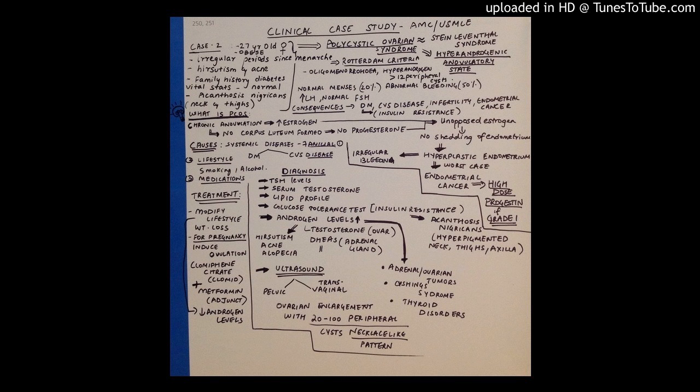So what exactly is PCOS? Now I told you it's basically a chronic anovulatory state, so basically there's no ovulation. If you remember your ovulation cycle, in the ovulation phase you have your corpus luteum which is formed. That is a very important step that leads to the rise of your progesterone levels.